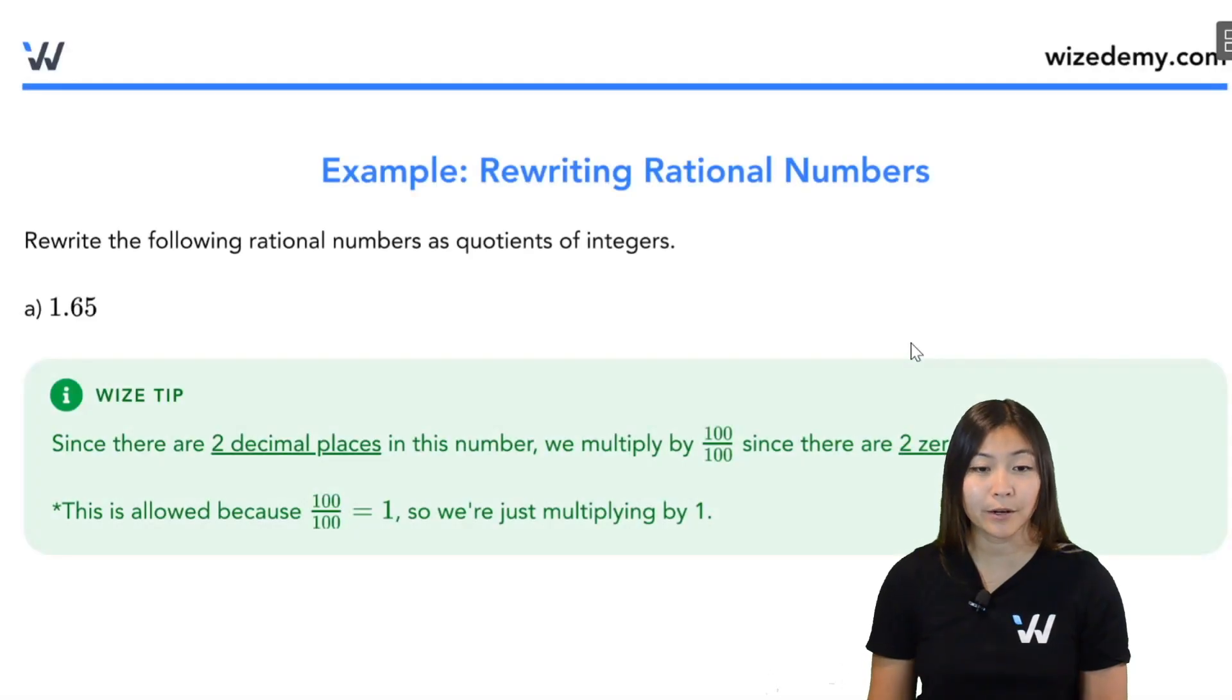Let's take a look at this example here. We want to rewrite the following numbers as a quotient of integers. Remember, quotient just means a fraction where the numerator is an integer, denominator is an integer.